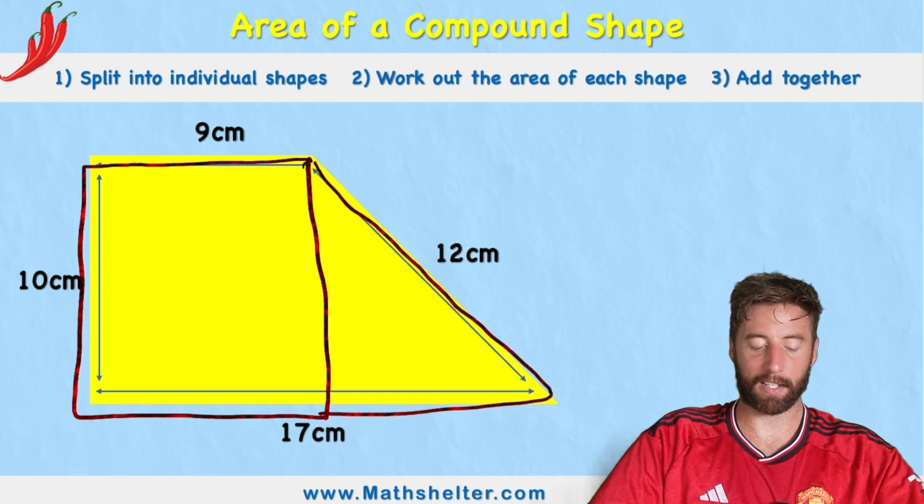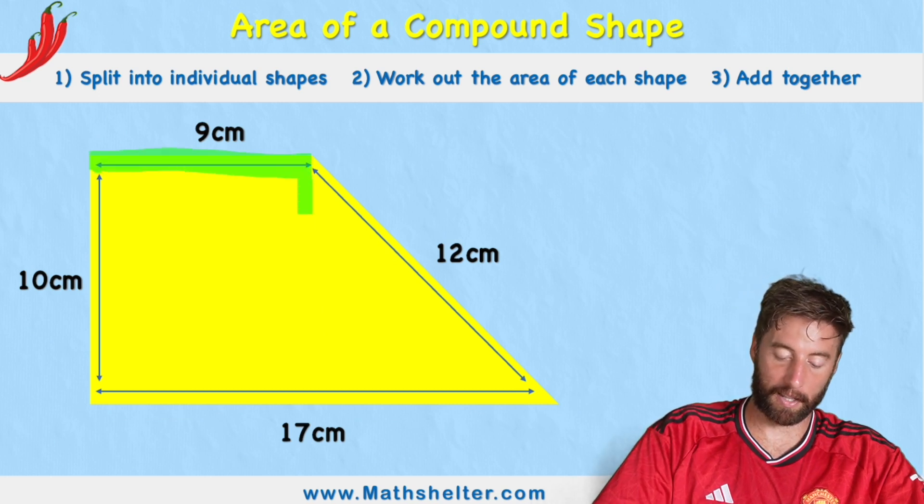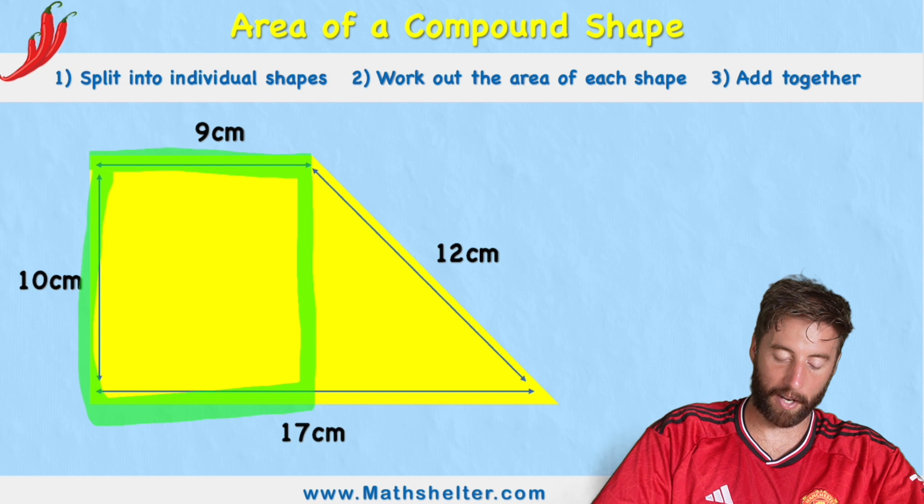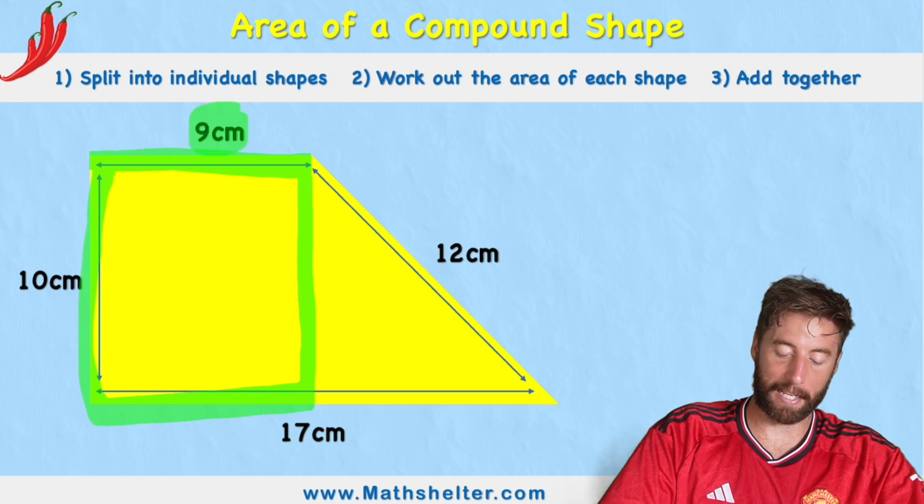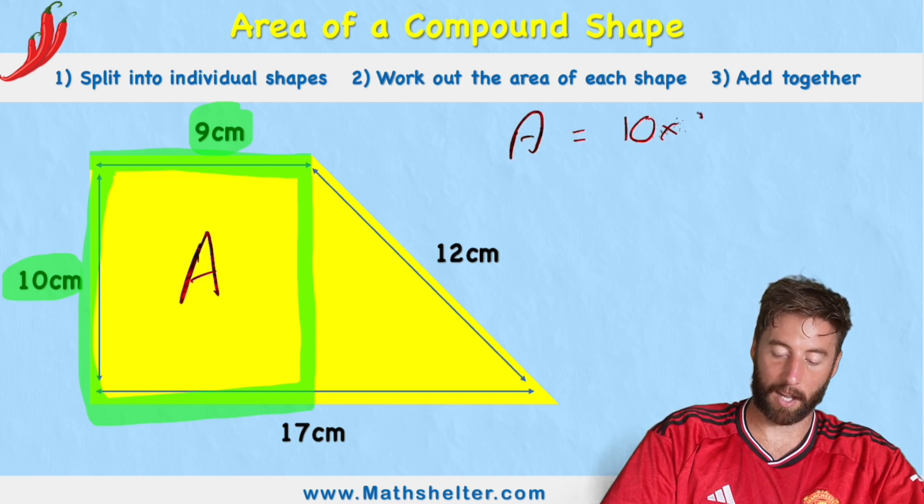So how are we going to measure this? Well, let's start with our rectangle and realize that these are the measurements for our rectangle. We have a base of 9 centimeters and a height of 10. So my shape A equals 10 times 9, which is 90 centimeters squared.